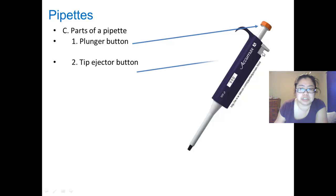The tip ejector button is used when you're done with the pipette tip. You hit the ejector button to release the tip into waste. The volume adjustment dial is where you turn and adjust how many microliters you need of liquid.